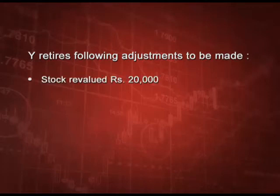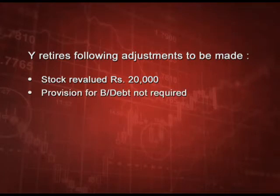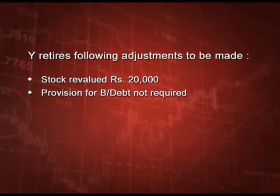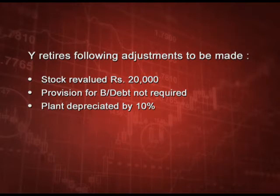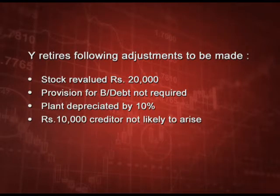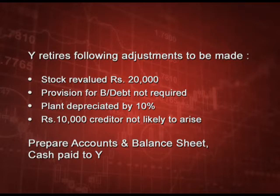Adjustments: stock is revalued at 20,000 (from 15,000 in the balance sheet), giving a gain of 5,000. Provision for bad and doubtful debts is no longer required — another gain of 5,000 credited to revaluation. Plant is depreciated by 10% on a value of 50,000, giving a loss of 5,000 debited to revaluation. Also, 10,000 of creditors are not likely to arise, which is a gain. The required output is the accounts, balance sheet, and cash paid to Y.